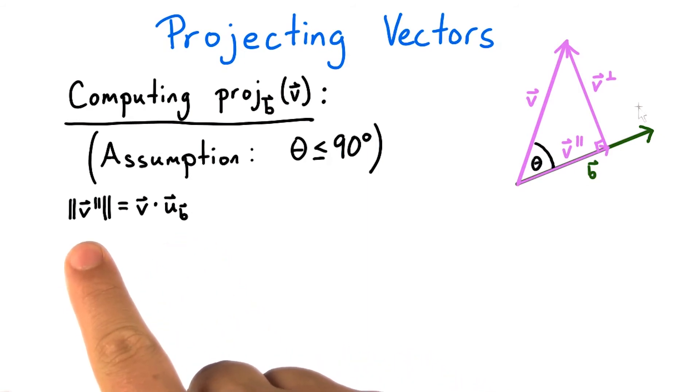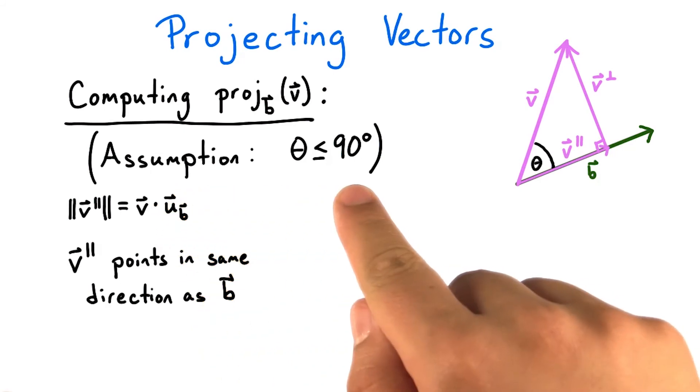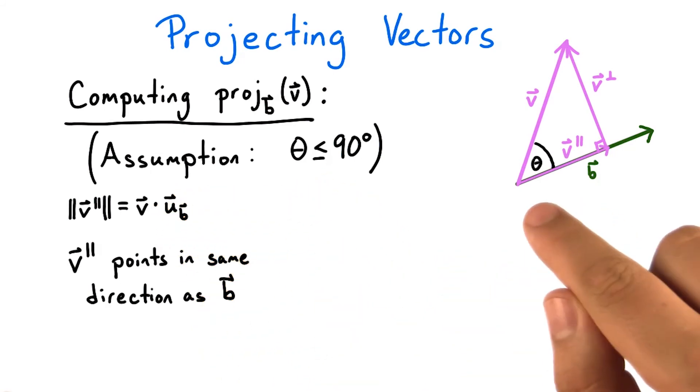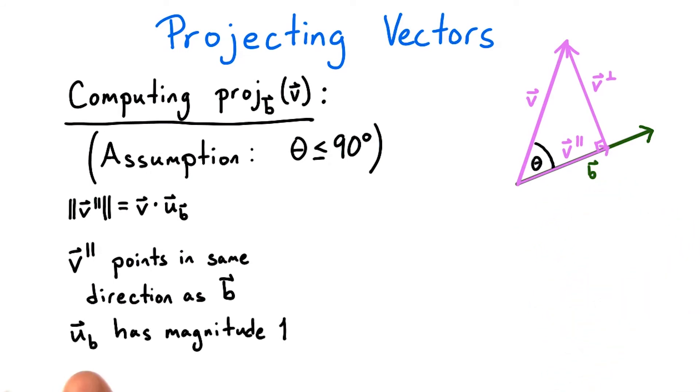The length of v parallel is equal to the dot product of just v with the normalization of b. Now because we made this simplifying assumption that theta is less than or equal to 90 degrees, we know that v parallel will point in the same direction as b. We also know that the normalization of b is a unit vector, so it will have magnitude 1.